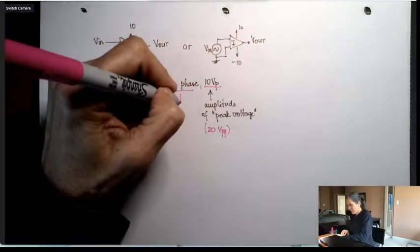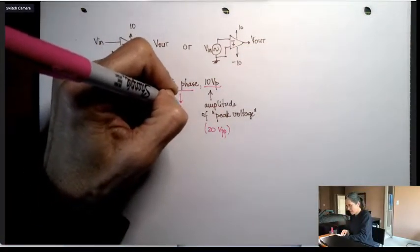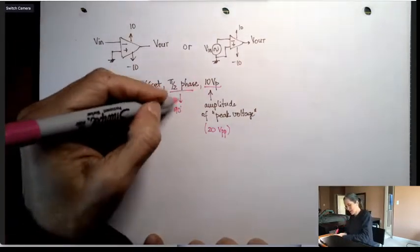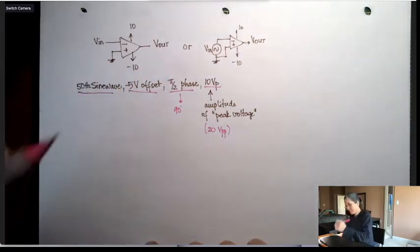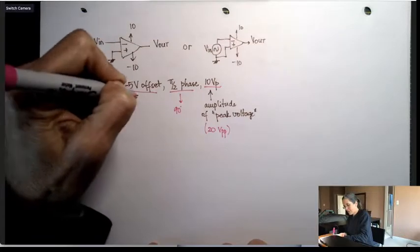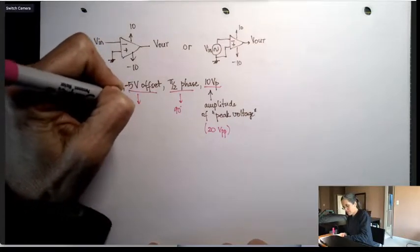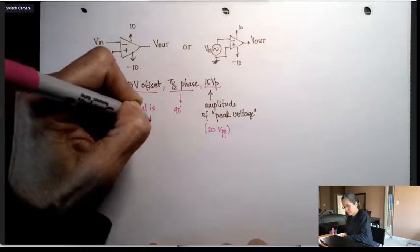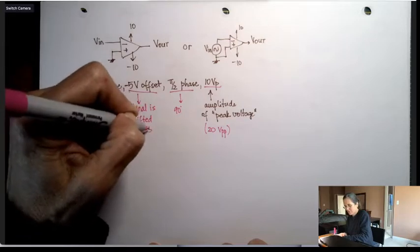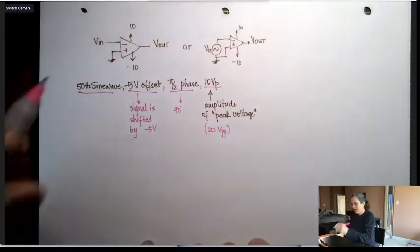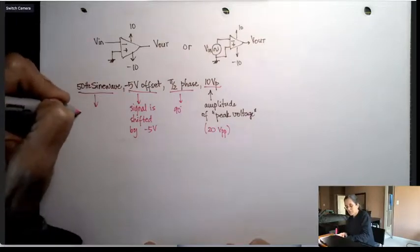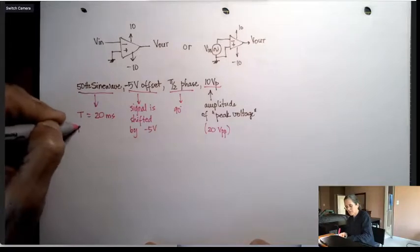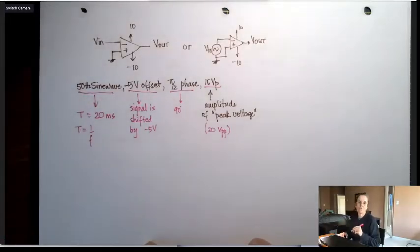These are the same thing. Pi over 2 phase means that the y-axis is moved up by pi over 2, and minus 5 offset means the signal is shifted down, shifted by minus 5, which means 5 volts down. And 50 hertz sine wave means the period will be 20 milliseconds. So I do expect you to remember that the period is 1 over frequency, and that 1 over 50 is 20.